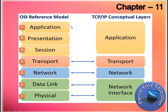Here is the comparison between OSI and TCP/IP: the Application, Presentation, and Session layers of the OSI model are equivalent to the single Application layer in TCP/IP. The Transport layer in OSI is equal to the Transport layer in TCP/IP. The Network layer maps to the Network layer. The Data Link and Physical layers of OSI are equivalent to the Network Interface layer in TCP/IP. This comparison makes it easy to learn both models.